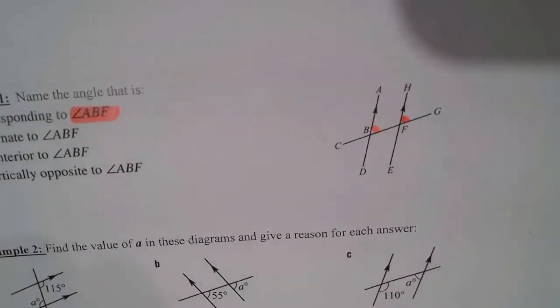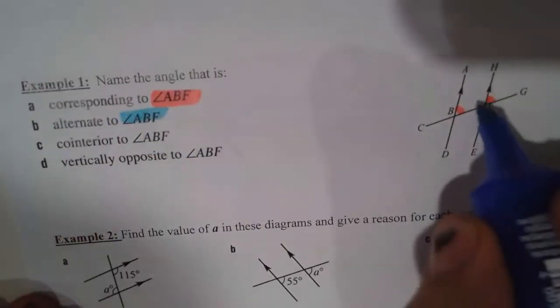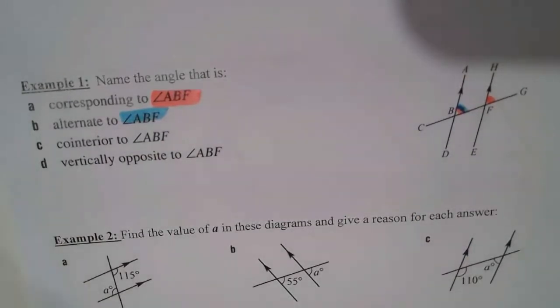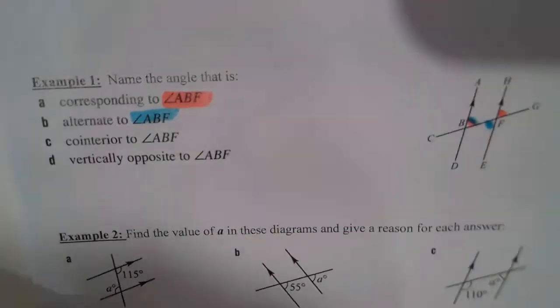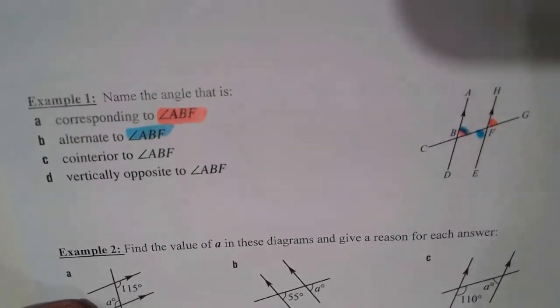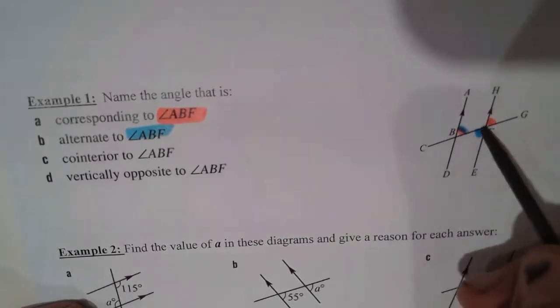Now, if we're looking for an alternate angle, so the alternate angle, we're going to start in the same place here at ∠ABF. An alternate angle to ∠ABF is on the opposite side of the transversal, but still within the two lines.